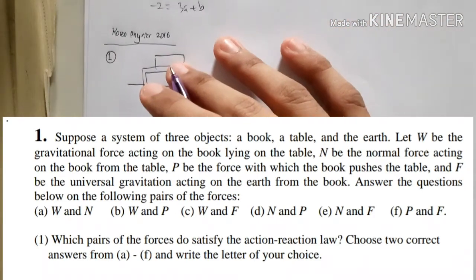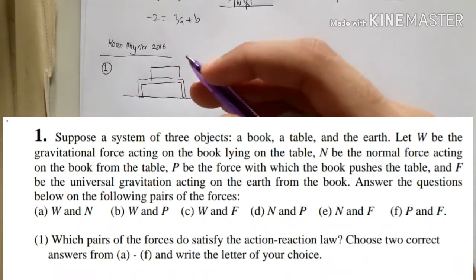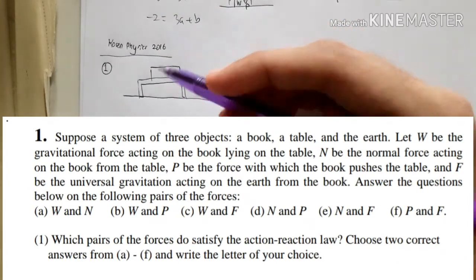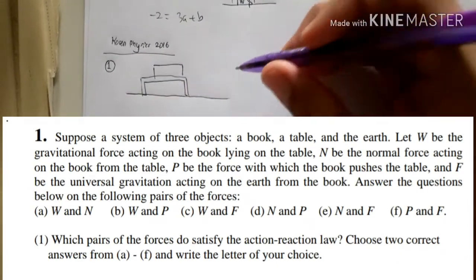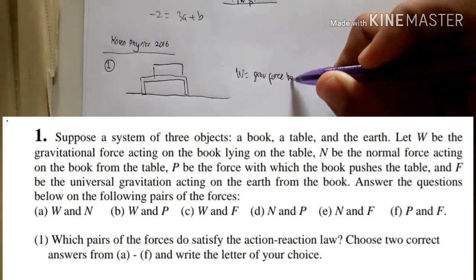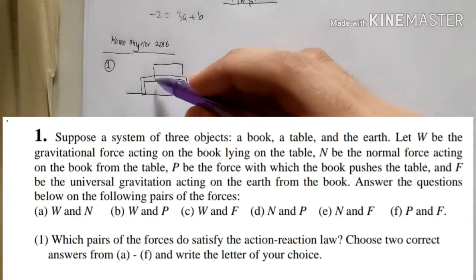Now see that from the forces that are given, it says W will be the gravitational force acting on the book lying on the table. So basically W is the gravitational force on the book lying on the table.